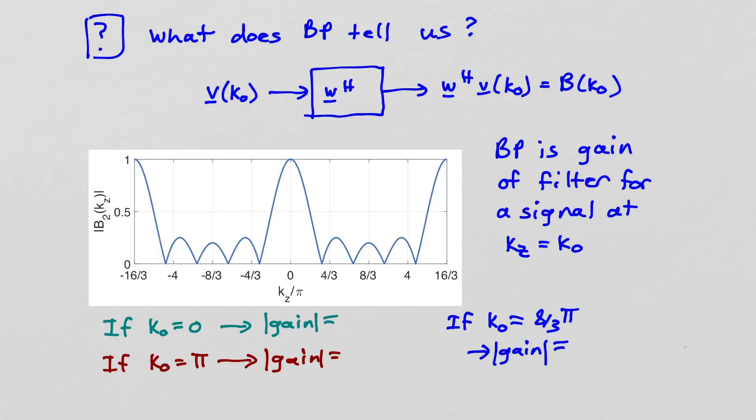Okay, so our final question to answer is what does the beam pattern actually tell us? Well, it tells us the gain that the spatial filter applies to a particular signal with a particular spatial frequency. So if the input spatial frequency is k0, what is the gain that gets applied to it? Well, that's b of k0, so I read that off. Now that gain, it's really, the gain, the beam pattern is a complex number. Here we'll just look at the absolute value of the gain to start getting some insight into what happens.